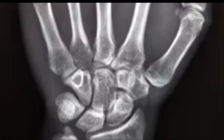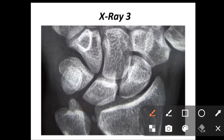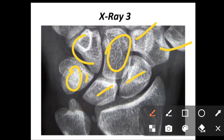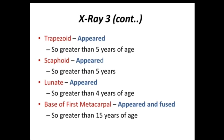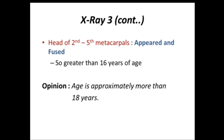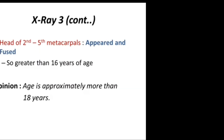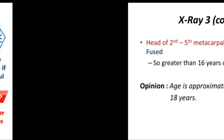The base of the first metacarpal is fused — fusion occurs at 15 to 17 years. Lower end of radius appeared and fused: greater than 18 years. Lower end of ulna appeared and fused: greater than 17 years. All carpal bones appeared including pisiform: greater than 11 years. Base of first metacarpal appeared and fused: greater than 15 years. Head of second to fifth metacarpals appeared and fused: greater than 16 years. Opinion: the age is approximately more than 18 years, as every bone has appeared and every ossification center is fused — completion of the wrist joint occurs at 17 to 18 years.